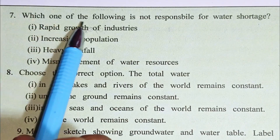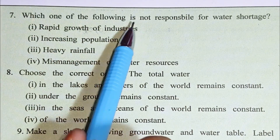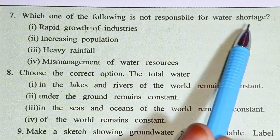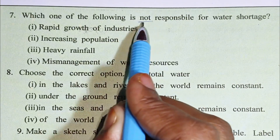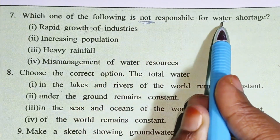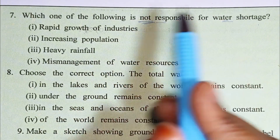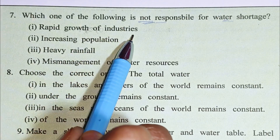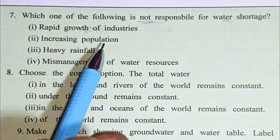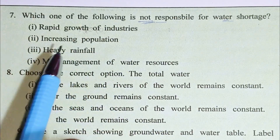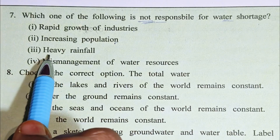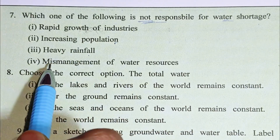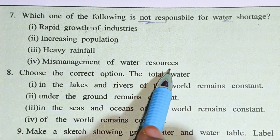Question 7: Which one of the following is not responsible for water shortage?